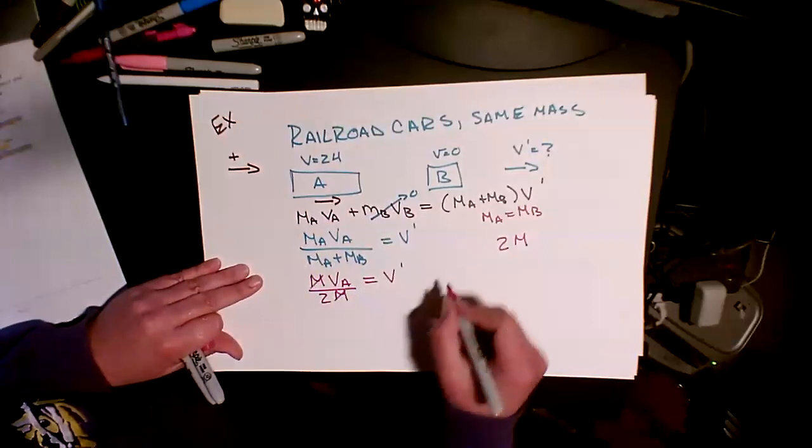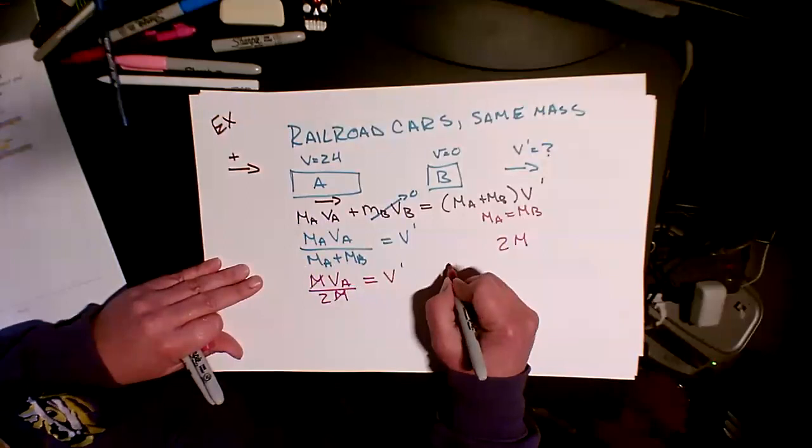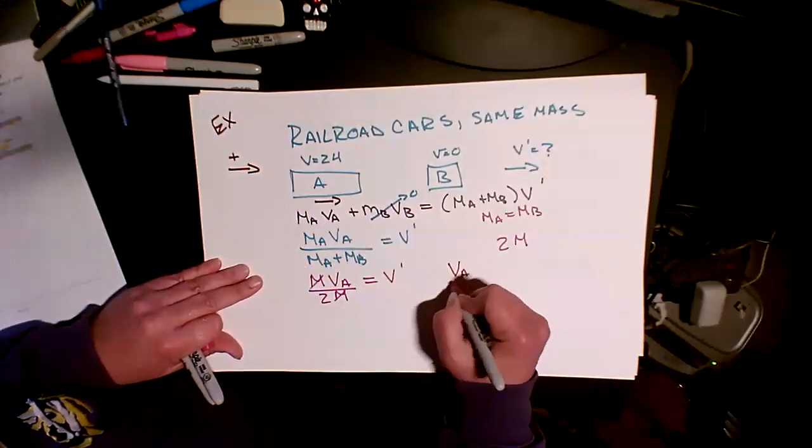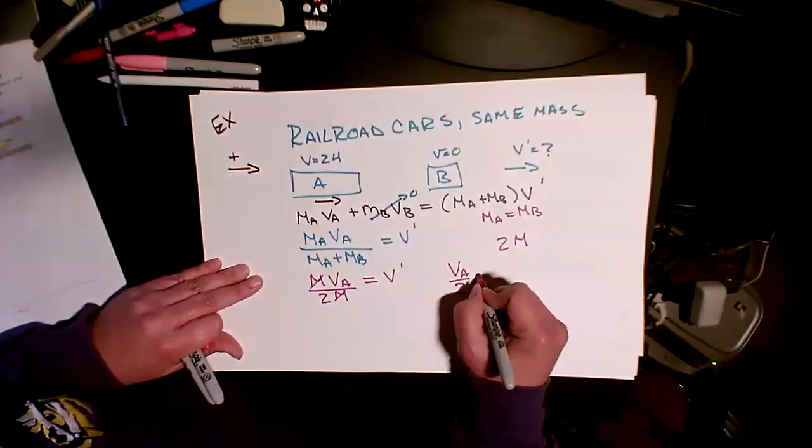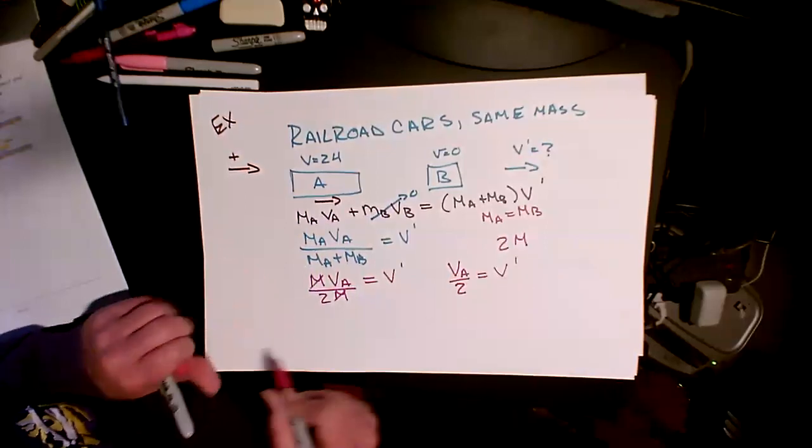Masses cancel. So with identical masses, what this is saying is that my initial velocity divided by two, because now it's twice as massive, would give me my final velocity.